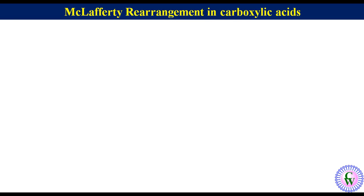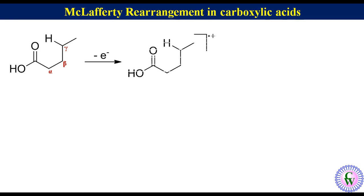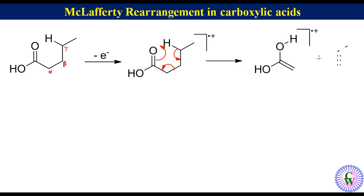McLafferty rearrangement in carboxylic acids. Here we are taking the example of pentanoic acid. It has gamma hydrogen. Removal of one electron from the molecule gives a parent radical cation which undergoes McLafferty fragmentation to produce another radical cation and a propene molecule. This radical cation will show a peak at m/z value of 60.